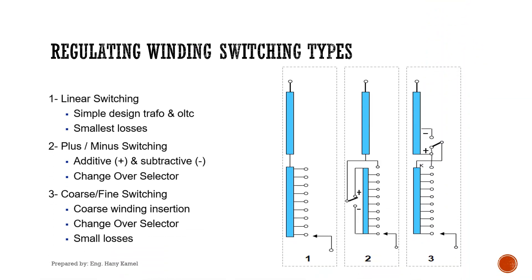We will talk about regulating winding switching types. There are three types: linear switching, plus-minus switching (also called reverse switching), and coarse-fine switching. Each type has its own applications.